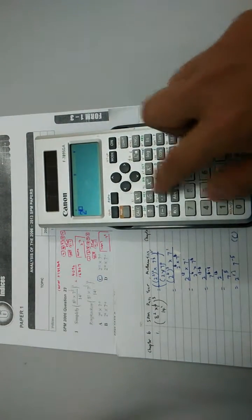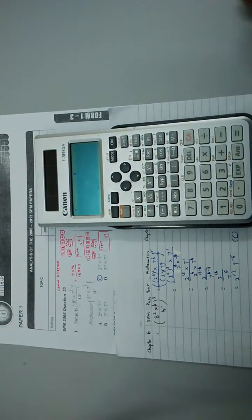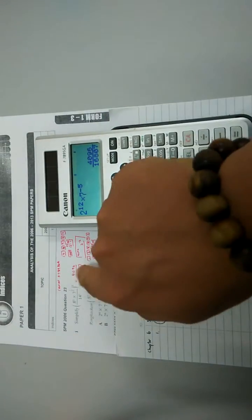2 to the power of 12 multiply with 7 to the power of negative 5. Yes, this is same with this.